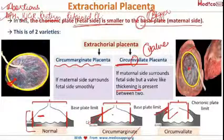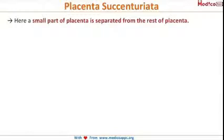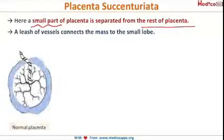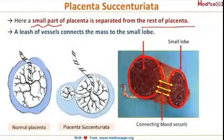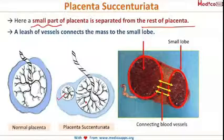Moving on to the next type of placental abnormality: placenta succenturiata. In this, a small part of the placenta is separated from the rest of the placenta, and a leash of vessels connects the main mass to the small lobe, as we can see in this diagram — the small lobe is separated from the main mass and both are connected by a leash of vessels.